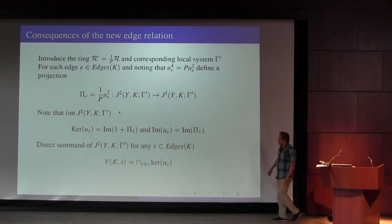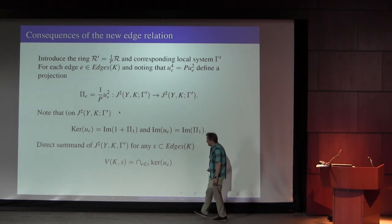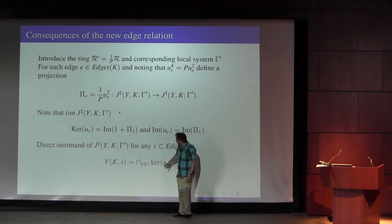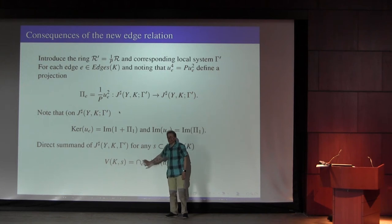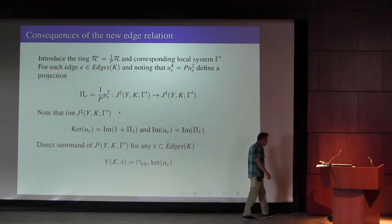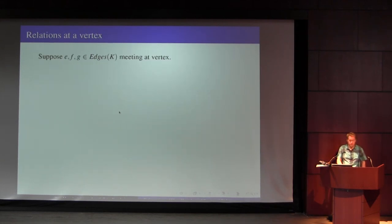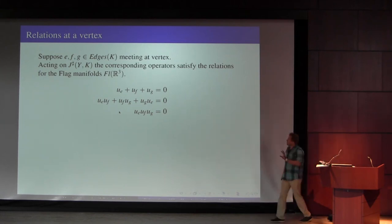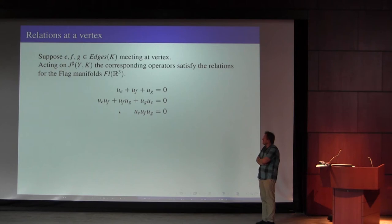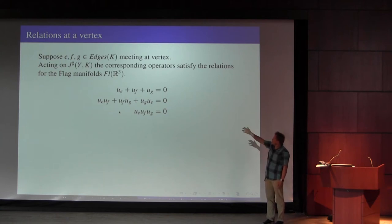In other words, once I pass to γ-prime, if I have any set of edges then because of this projection I can pull off a direct sum, which is just the intersection of the kernels. This projection tells you that it's actually a direct sum. Now there are some relations at a vertex. In the J-sharp story, if I have three edges meeting at a vertex, I have three edge operators u_e, u_f, and u_d, and they satisfy the relations of the equivariant homology of the flag manifold.